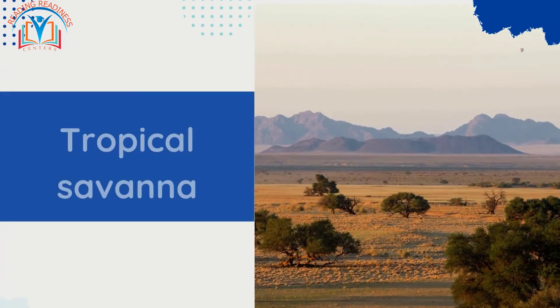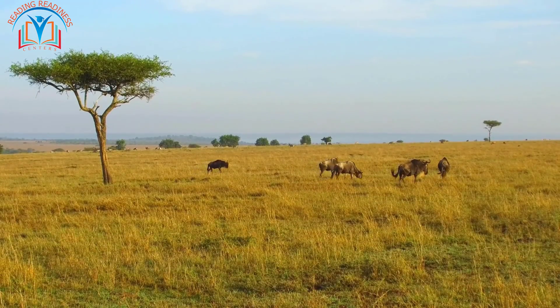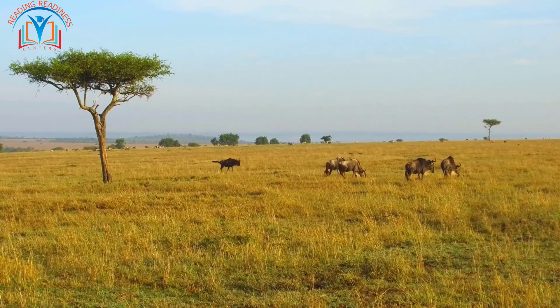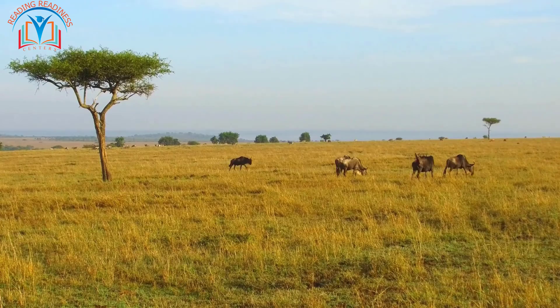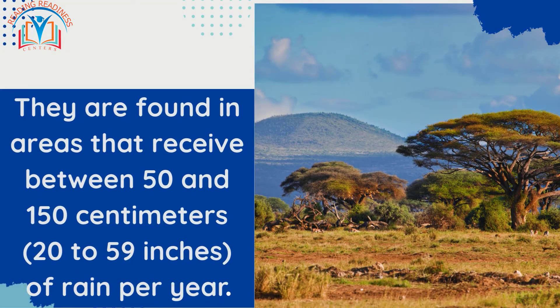Tropical savannahs are characterized by their grasslands and scattered trees. They are found in areas that receive between 50 and 150 centimeters — 20 to 59 inches — of rain per year.